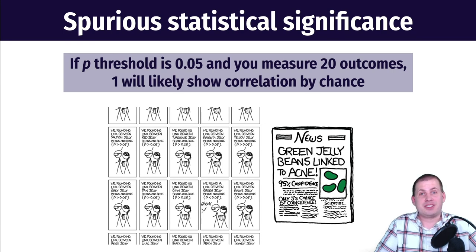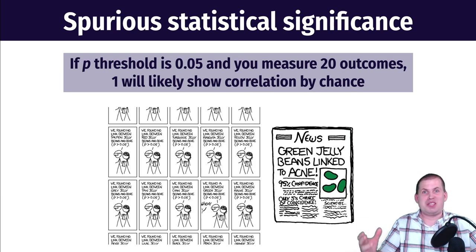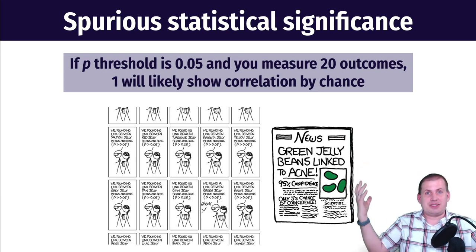That is statistical conclusion validity — a whole bunch of different statistical things that can happen to your study and analysis to make it go wrong. You should care about these things, and as you're doing your analysis, make sure it meets all of these different standards.